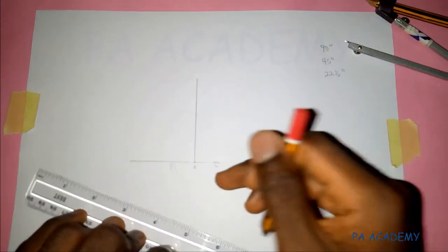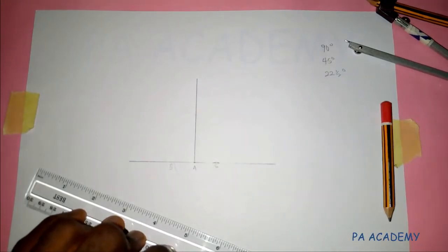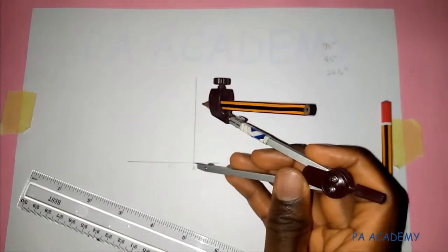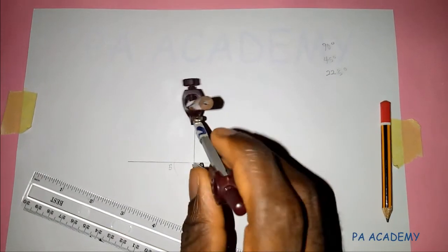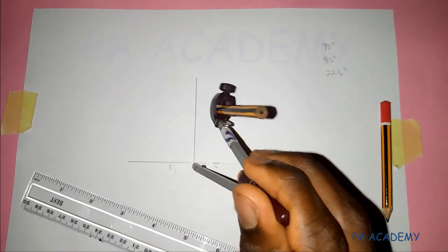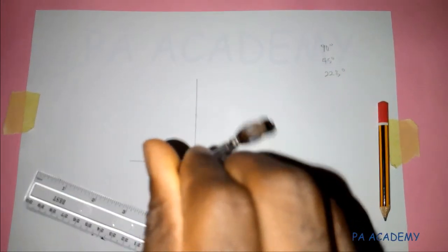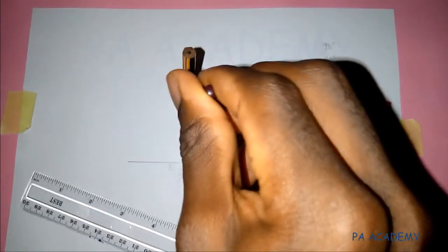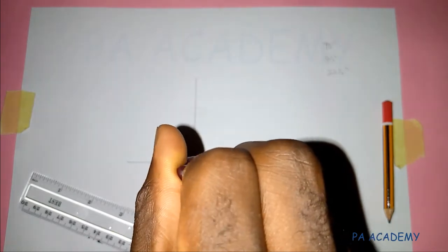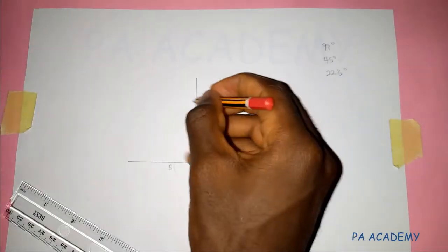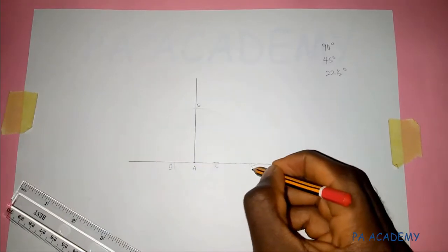The next thing now is — from this angle 90 — that's where we can get our angle 45. To get angle 45, you pick your compass at any convenient length or radius and put it at point A. You bisect the perpendicular line and then the base line. Let's call this point E and this point F.